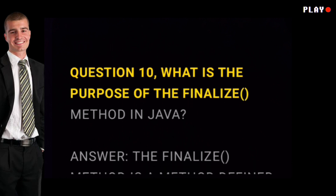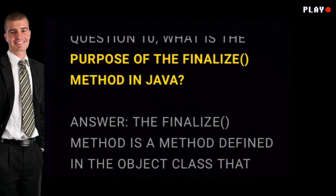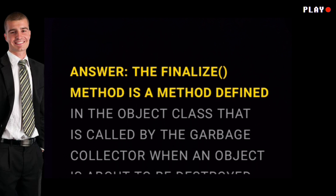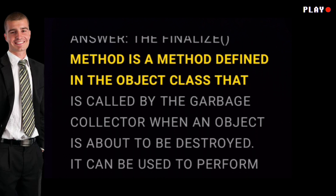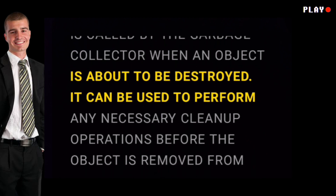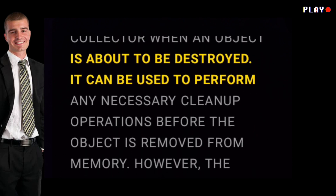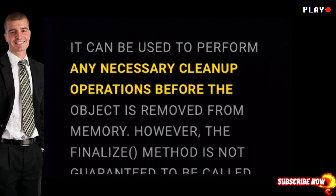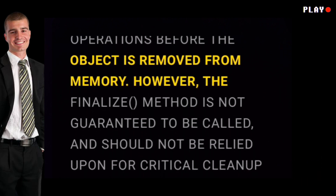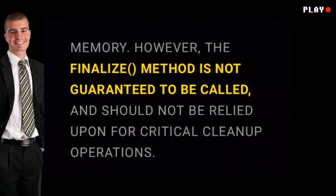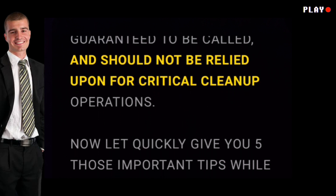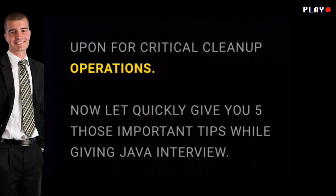Question ten: what is the purpose of the finalize method in Java? Answer: the finalize method is a method defined in the Object class that is called by the garbage collector when an object is about to be destroyed. It can be used to perform any necessary cleanup operations before the object is removed from memory. However, the finalize method is not guaranteed to be called and should not be relied upon for critical cleanup operations.